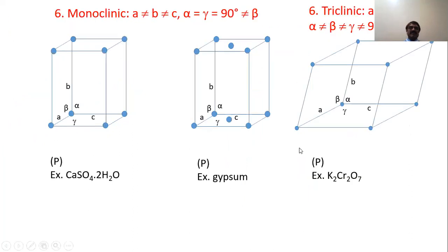In monoclinic, all sides are different: A not equal to B not equal to C. Two angles — alpha and gamma — are 90 degrees, but beta is other than 90 degrees. Two types are possible: simple monoclinic, example CaSO4 (calcium sulfate), and end-centered monoclinic, example gypsum.